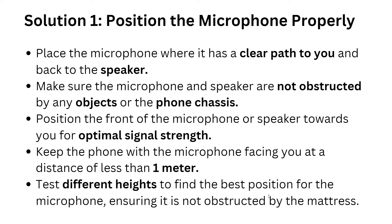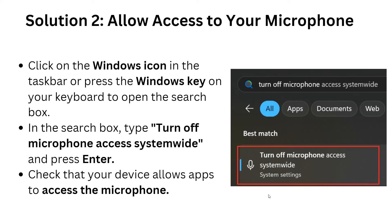Ensure that you place the microphone where it has a clear path to you and back to the speaker. Make sure that your microphone and speaker are not obstructed by any object or phone cases. Position your microphone toward optimal signal strength, keeping the phone with the microphone facing you at a distance of at least one meter. Test different heights to find the best position for the microphone, ensuring it is not obstructed.